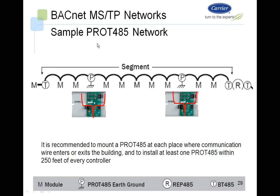Looking at a sample network with PROT45s: mount the PROT45 at each place where the communication bus enters or exits the building and within 250 feet of every controller. In this physical segment, installing a PROT45 within 250 feet of controllers provides protection so that if there is a surge on a portion of the segment, the nearby controllers would be protected. Controllers farther from the surge point on the segment would also be protected, though those at an unprotected end might be lost.